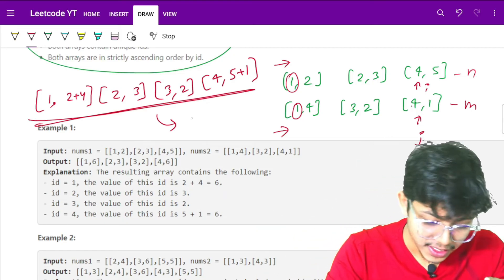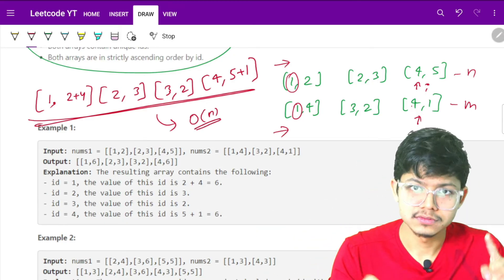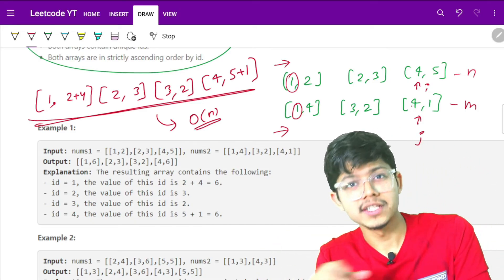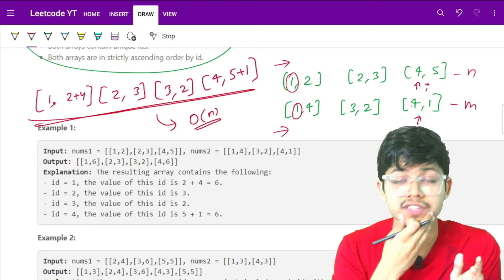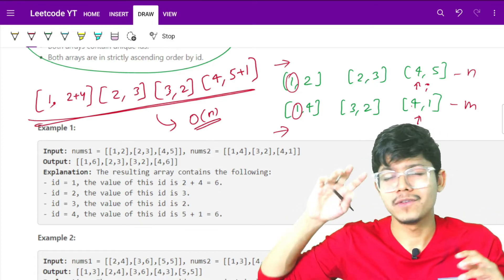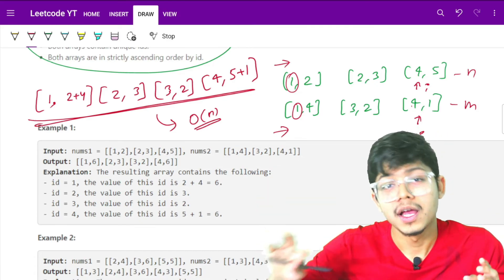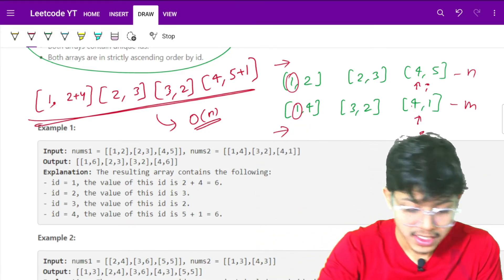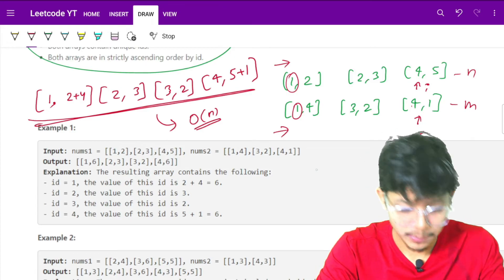You can see I didn't use any extra space other than the array, which is O(n). I didn't use extra space to store values like I would have with a map. With a map, complexity would be O(n+m log(n+m)). Here the complexity is just O(n+m).